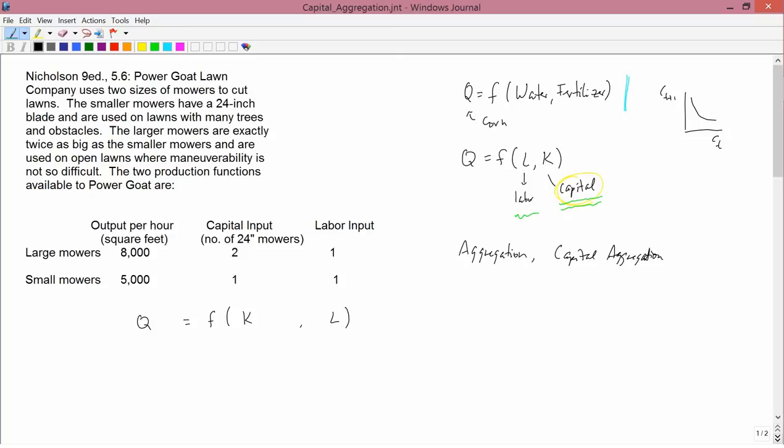And what I'm going to do next is talk about aggregation in the context of consumer theory, because you understand consumer theory better now than you do production theory. We're just starting to learn about production. And the issues will be highlighted in consumer theory pretty starkly. Then we will come back and see how the lessons from consumer theory aggregation can be applied to a discussion of capital aggregation.